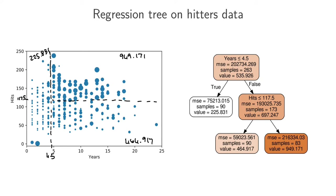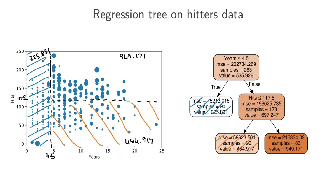Each of the leaf nodes — the bottom nodes of the tree — corresponds to a specific region in the input feature space. This leaf node corresponds to this region here, this leaf node corresponds to this region here, and this leaf node corresponds to this region up here. So very similar to decision trees, the regression tree separates the input feature space into these blocks.